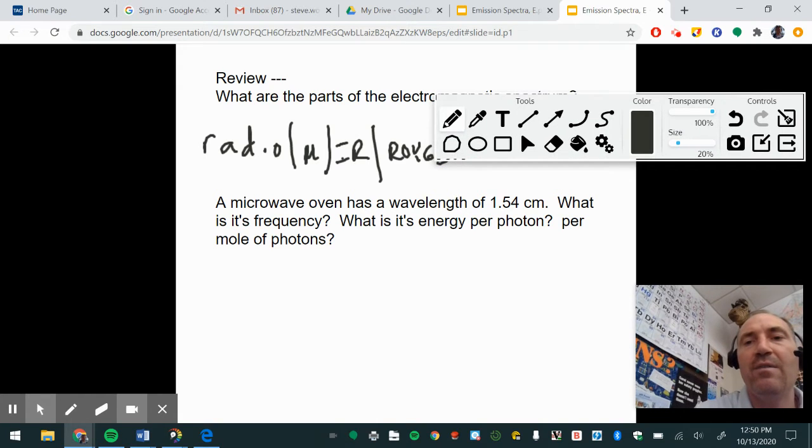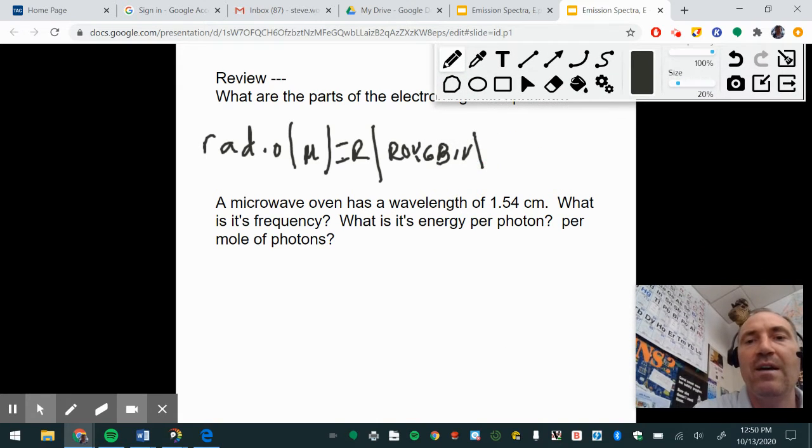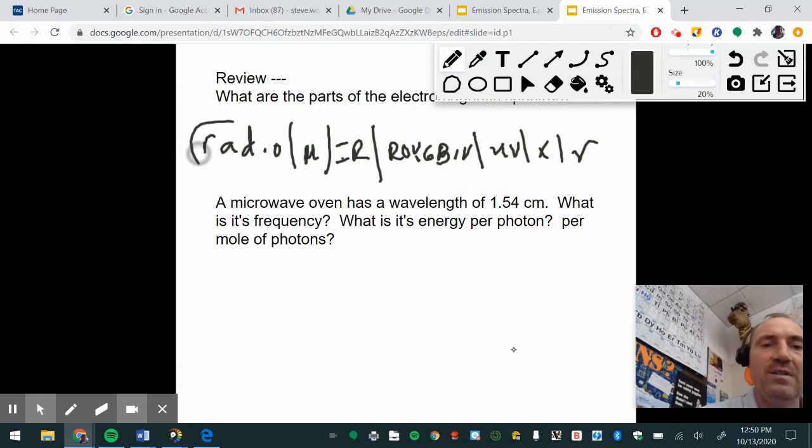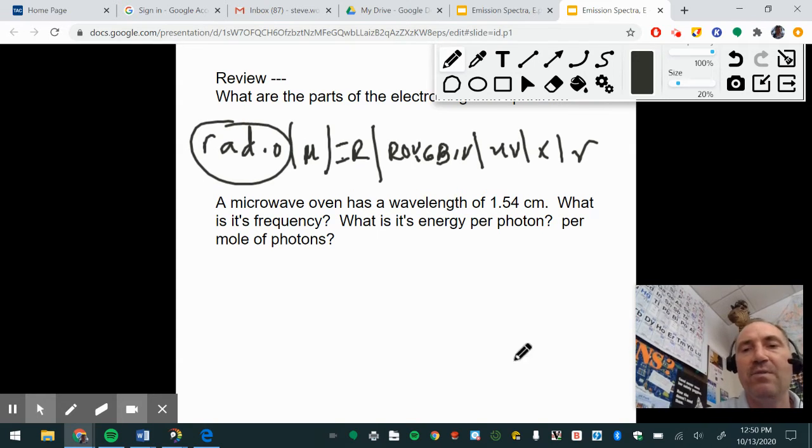And then we have UV, X-ray, and then gamma ray. Those are the parts of the spectrum. This side over here would have the largest wavelength, this would have the highest frequency. This side would have the lowest energy, this side would have the highest energy.